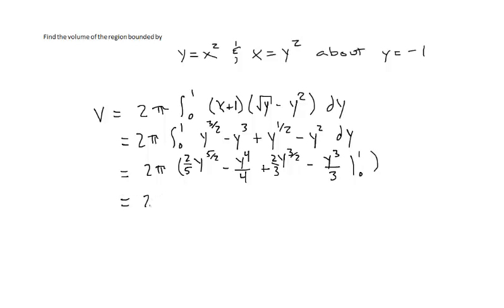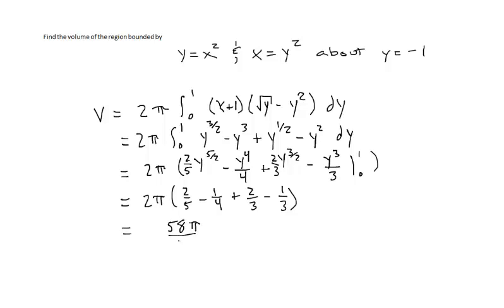Evaluating, we have 2π times: plugging in 1, we get 2/5 minus 1/4 plus 2/3 minus 1/3. When we plug in 0, every term has a y, so it all equals 0. Adding everything up and multiplying by 2π, we get 58π divided by 60 units cubed.